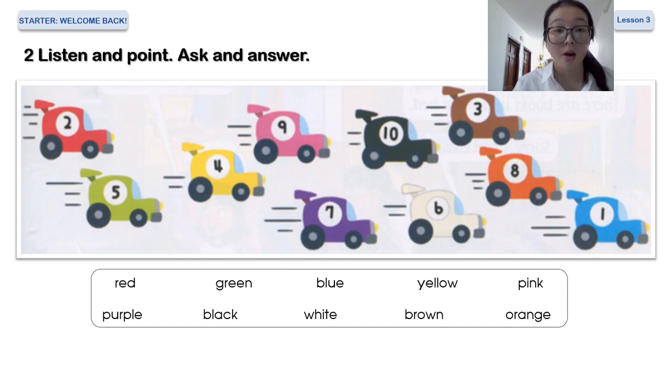Wow, you can see there are many colors and the numbers. Can you see? Part 2, listen and point, ask and answer. Now I will read one more time. Number 1, 2, 3, 4, 5, 6, 7, 8, 9, and 10. And can you see, under the post you can see many colors. Number 1, I will say red, green, blue, yellow, pink, purple, black, white, brown, orange.